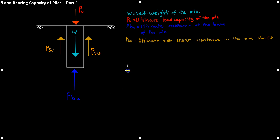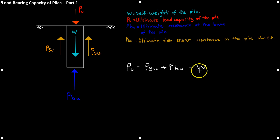Using the directions of the forces, PU equals PSU plus PBU minus W. So the ultimate load capacity of the pile equals the ultimate side shear resistance on the pile shaft, plus the ultimate resistance at the base of the pile, minus the self weight of the pile.